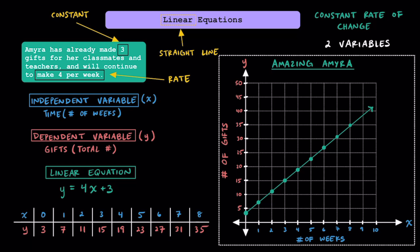Finally, I'll go over how to take your linear equation and table and create a graph on a coordinate plane. This 0, 3 in the table represents the ordered pair (0, 3), and that's located right here on the graph.